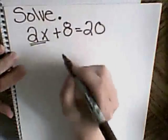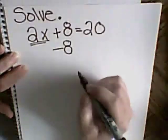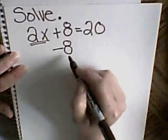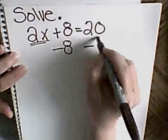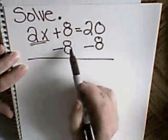Well, to get rid of a positive 8, I subtract 8. I do the opposite of what I see. If I subtract 8 on the left side of the equal sign, I need to subtract 8 on the other side of the equal sign. It's because I need to keep this balanced.